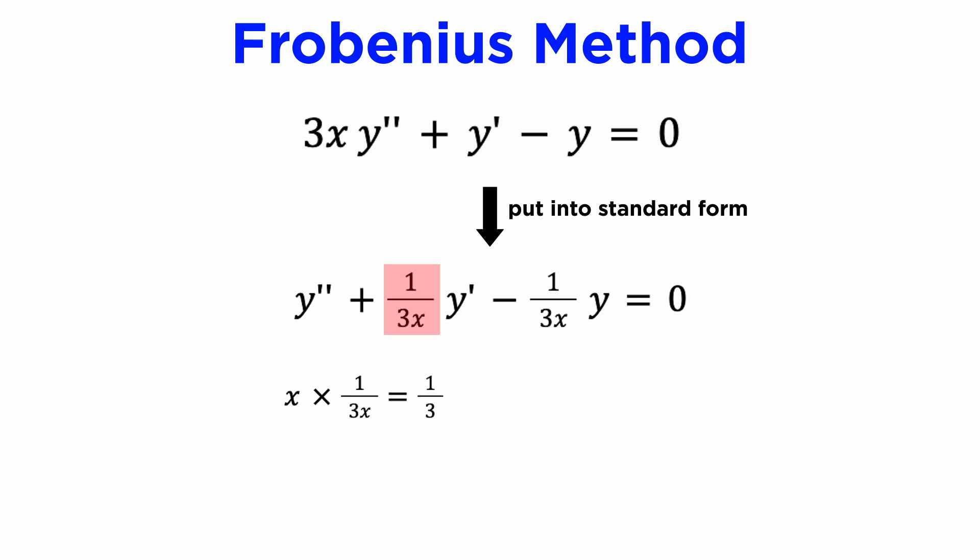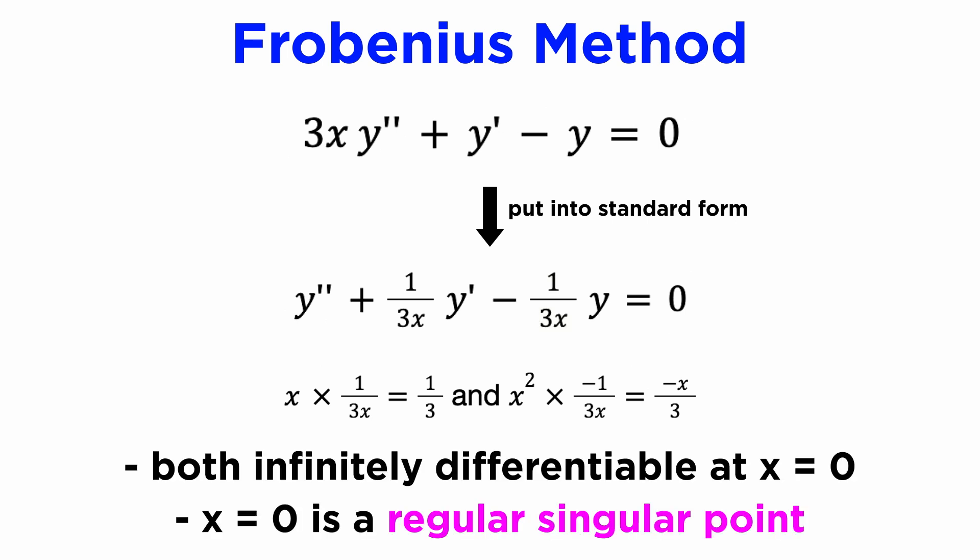Also, since we can multiply our p(x), which is 1/(3x), by x, and our q(x), which is −1/(3x), by x², in order to remove the singularity, x₀ is also a regular singular point, and our Frobenius power series will converge everywhere.